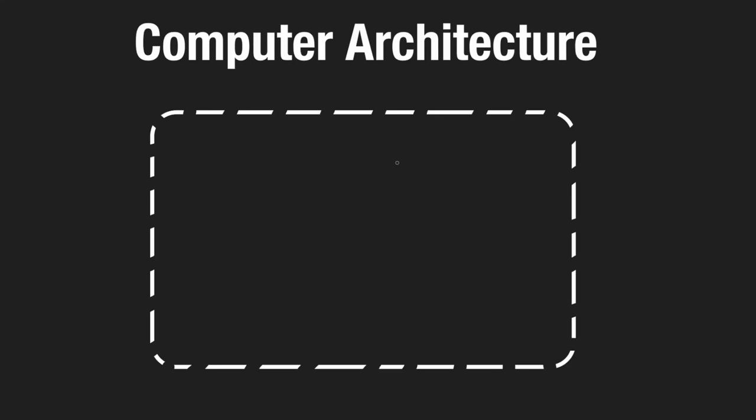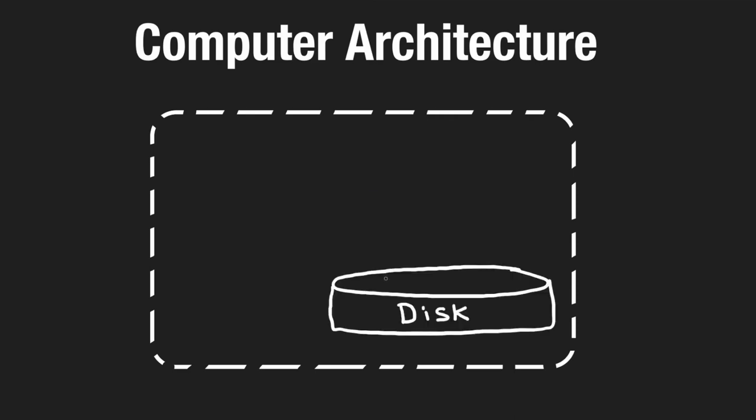Before we can understand how to design large-scale distributed systems, we first have to understand how a computer is designed, at least at the high level. We'll be going over the main components of a computer from a software perspective, and how they work together to execute the code that we write.